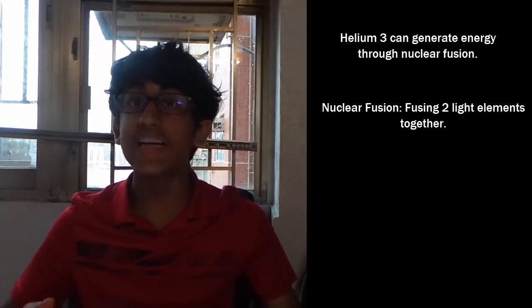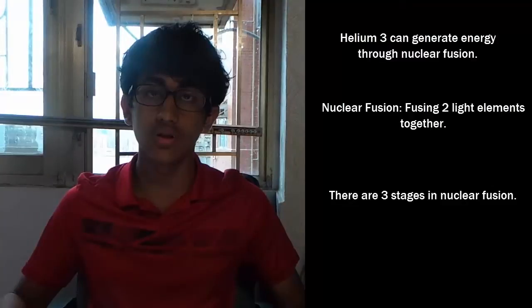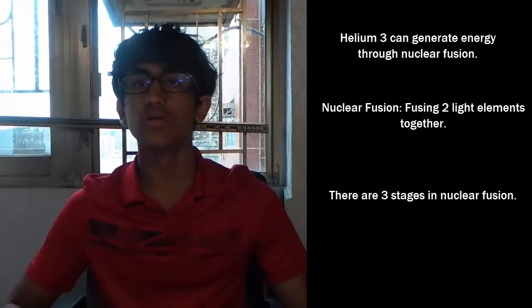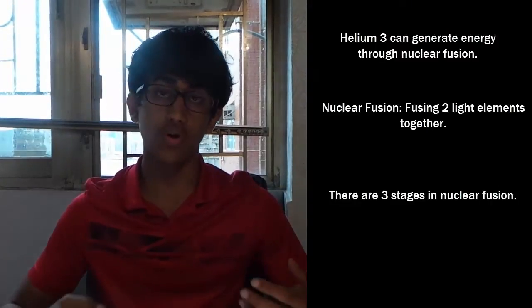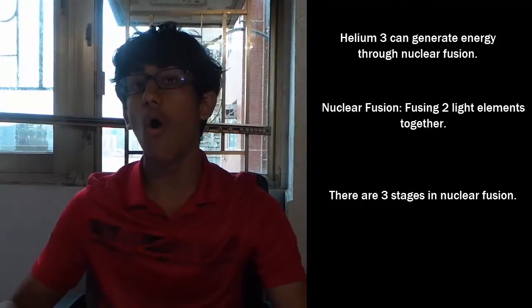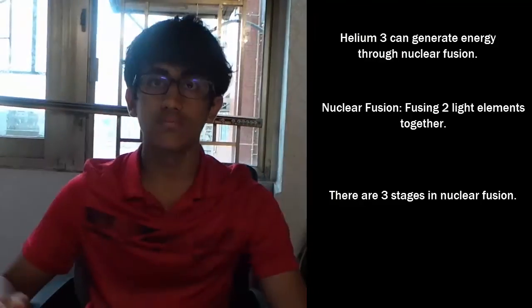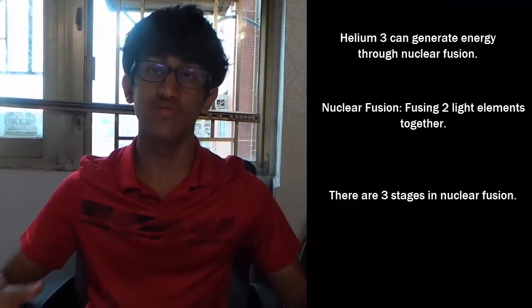There are three generations of fusion. The first generation of fusion involves deuterium and tritium. Deuterium is a naturally occurring isotope of hydrogen, also known as heavy hydrogen. It appears in all water around the world. Tritium, on the other hand, is a very rare isotope, and it is very radioactive.